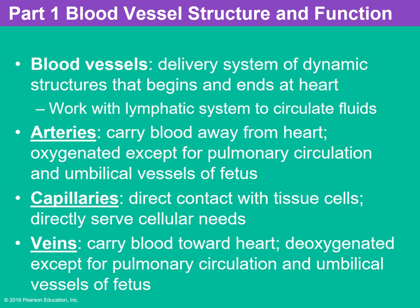Between the arteries and the capillaries there are arterioles, and between the capillaries and the veins there are venules. Arteries carry blood away from the heart — in most cases it's oxygenated, but not always. Capillaries are the smallest diameter blood vessels and this is where exchange of nutrients, waste products, and gases occurs. Veins carry blood back towards the heart, and in most cases the blood is deoxygenated, but not always.